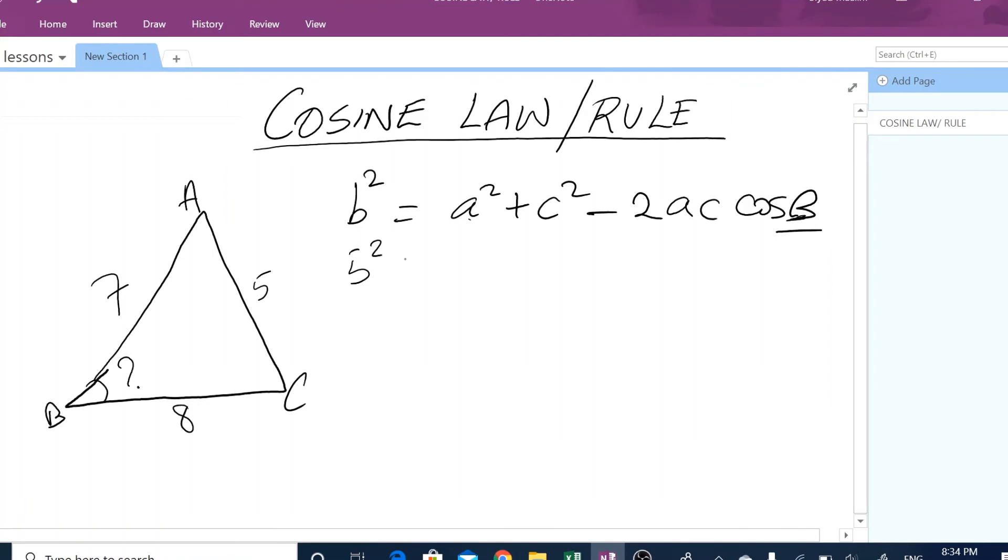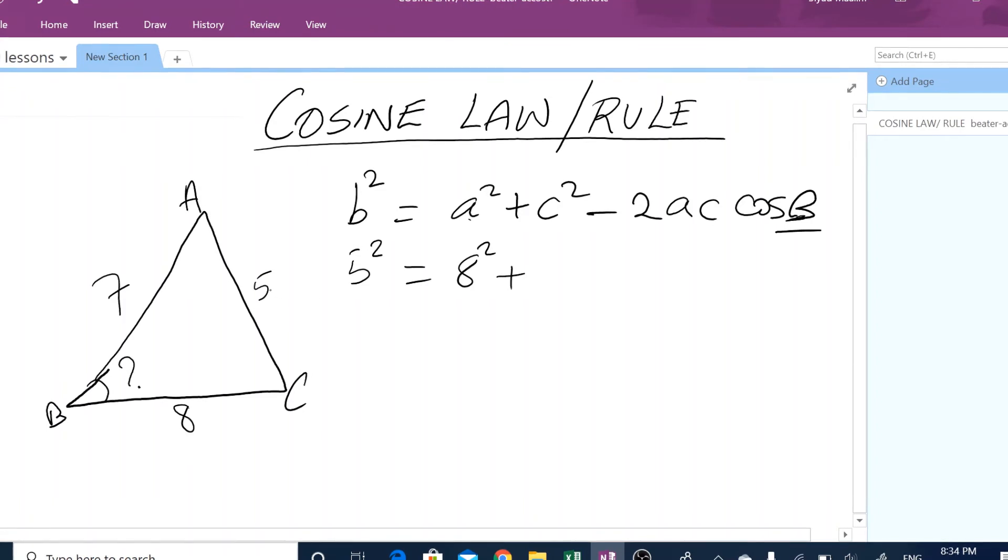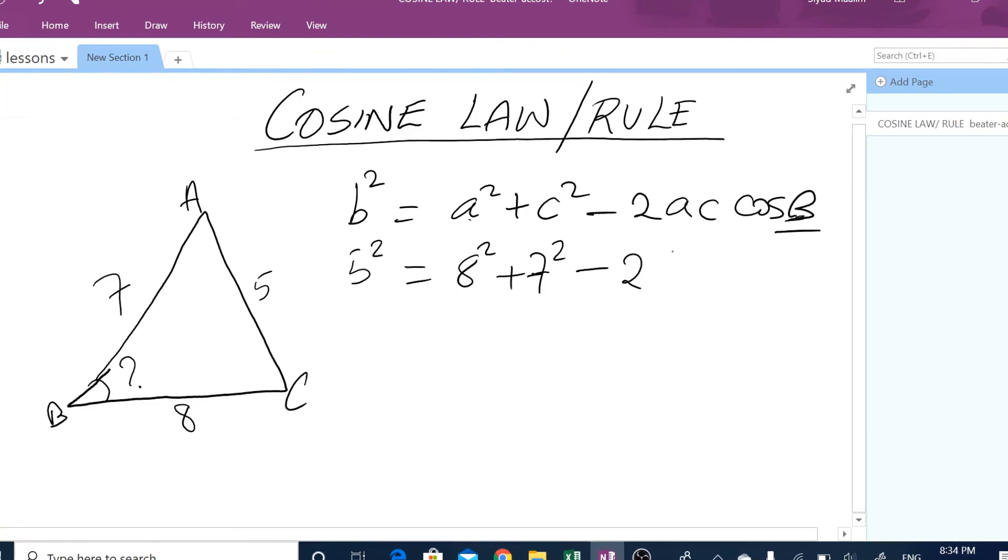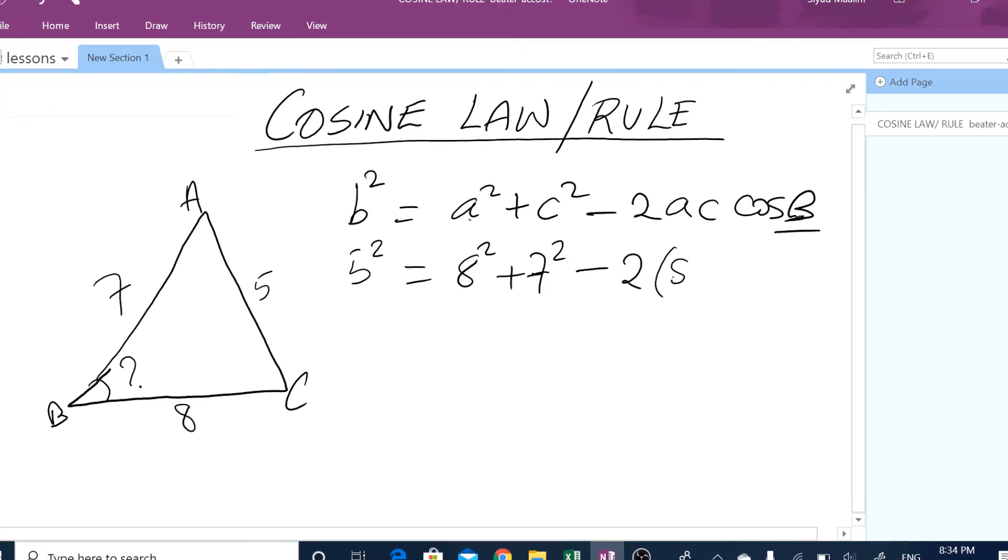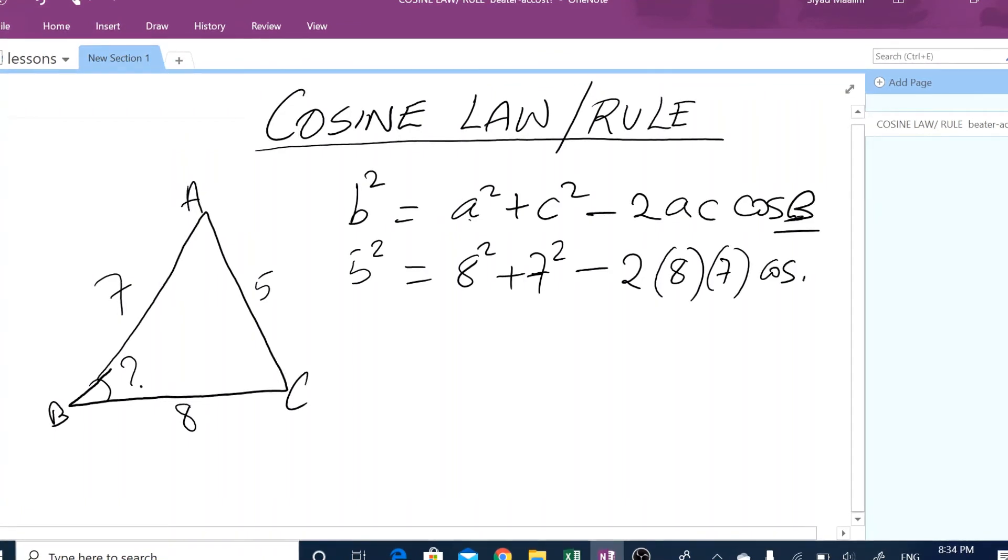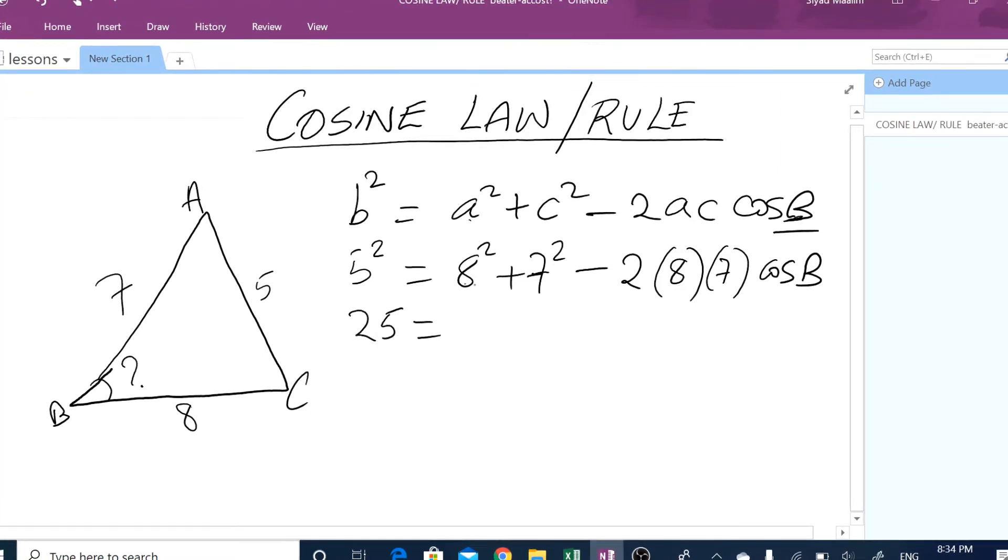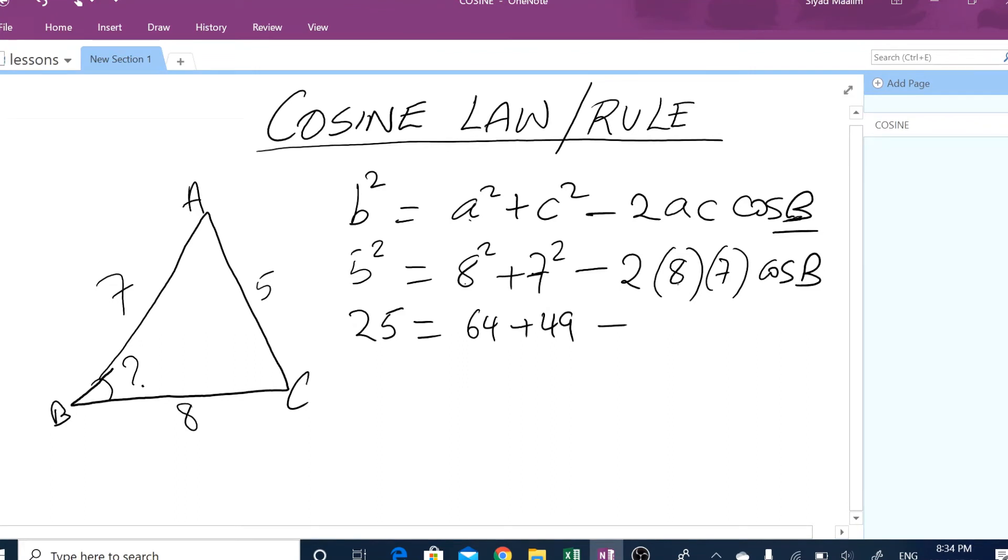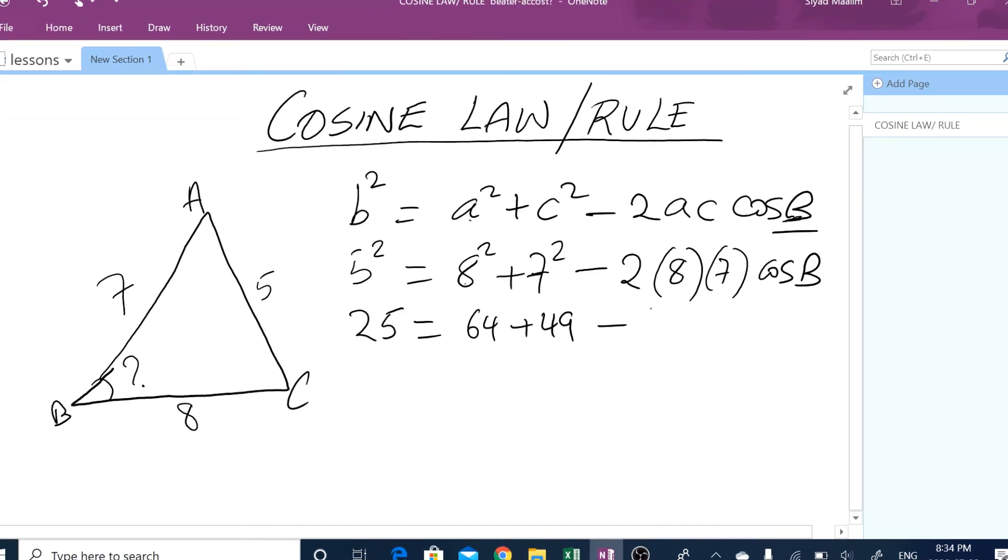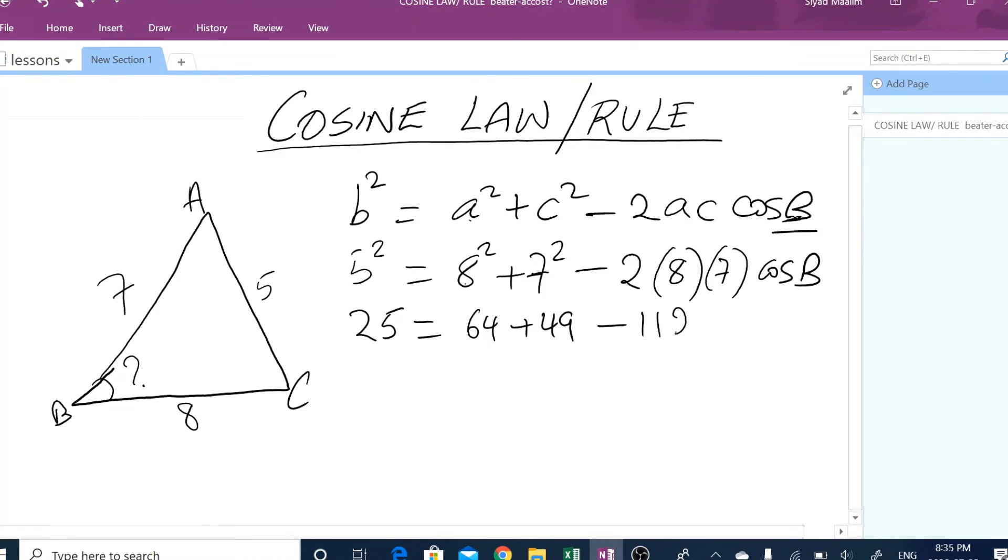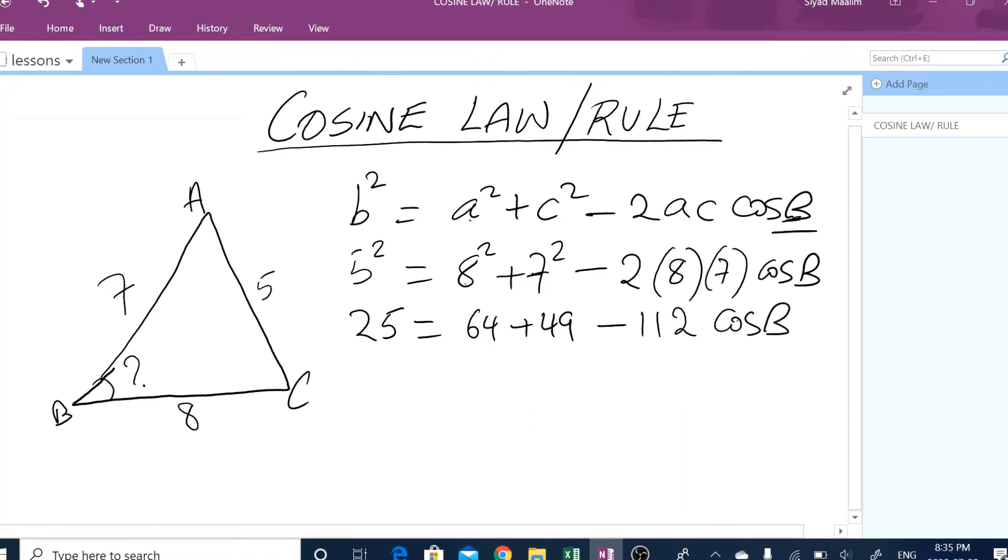What is b in this case? b is 5. 5 squared equals, what is a? a is 8. 8 squared plus, what is c? c is 7. 7 squared minus 2 times, multiplied by, what is a? a is 8, multiplied by c, what is c? c is 7, cos of B.